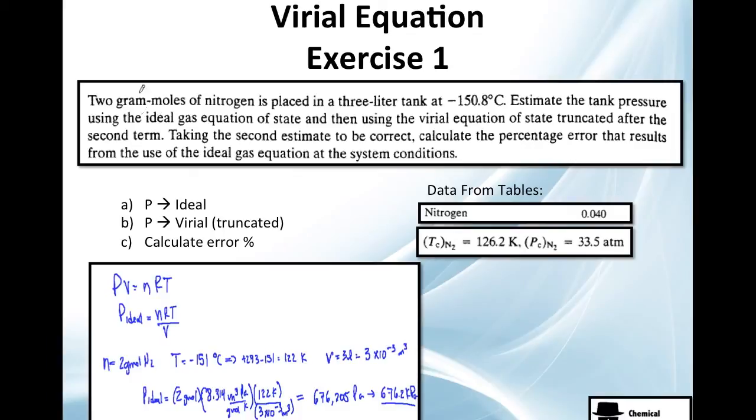Here's an example. 2 g moles of nitrogen is placed in a 3 liter tank at this temperature, negative. They tell you, please estimate the tank pressure with ideal gas and with the Virial equation, of course truncated. Supposing that the second one is correct, please calculate the percentage error here. So it is easy, three things. Pressure as ideal gas, pressure as real gas, and calculate the error.